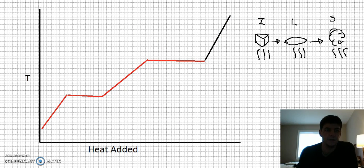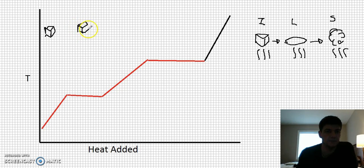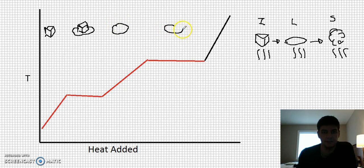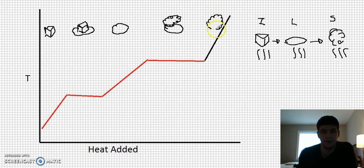Looking at what's happening inside: here we have just ice; here we have ice in the process of melting with a puddle of water around it; over here it's all melted and we just have a puddle of water; here we have a puddle of water with some steam starting to be produced; and over here we're superheated — all that exists is steam.